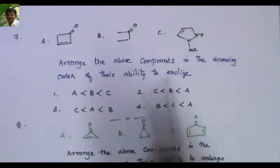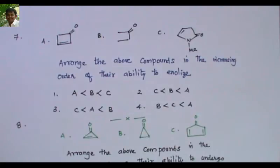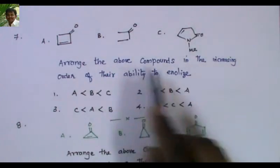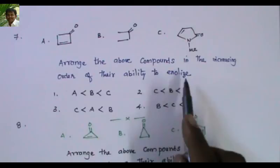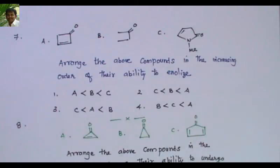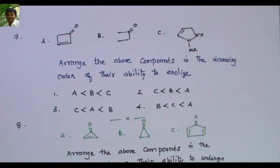Three compounds are given. Arrange the above compounds in the increasing order of their ability to enolize — which one will undergo enolization faster? Predict the order of the rate of enolization.